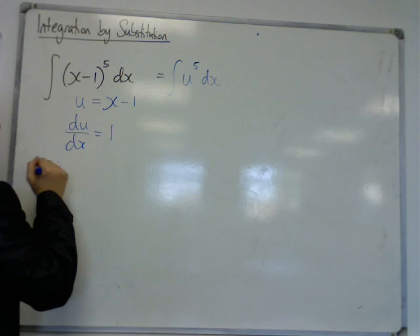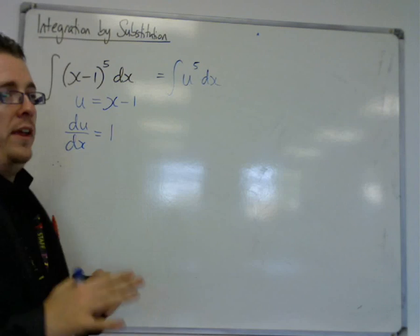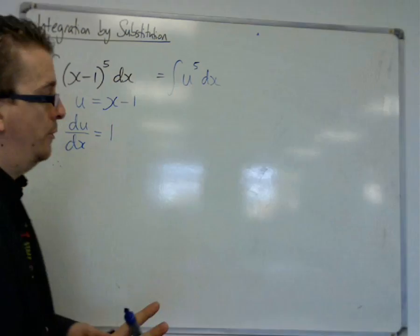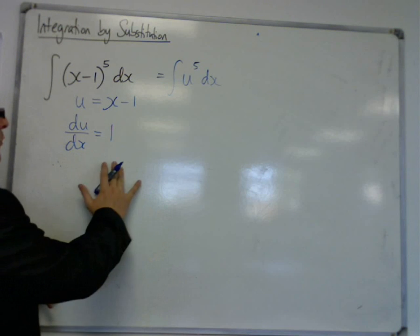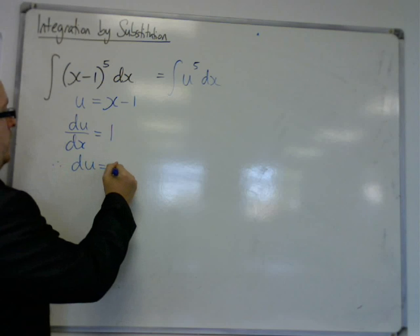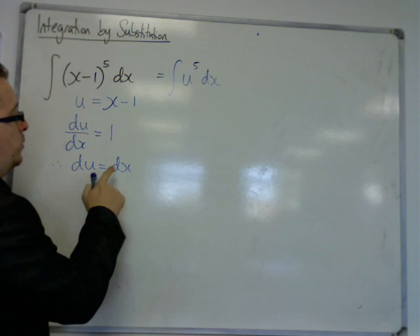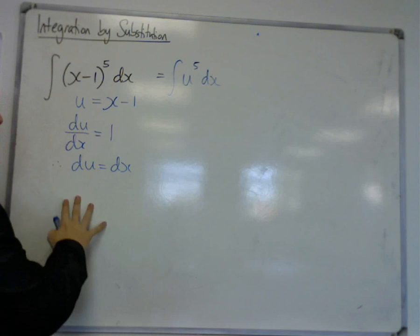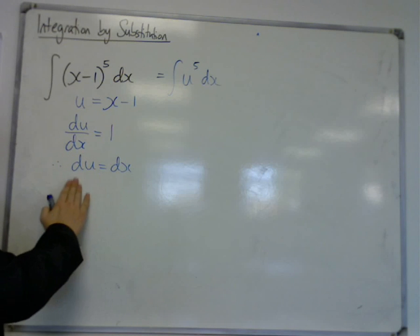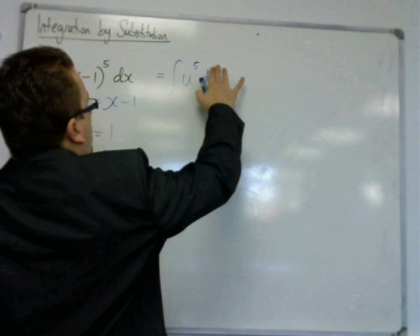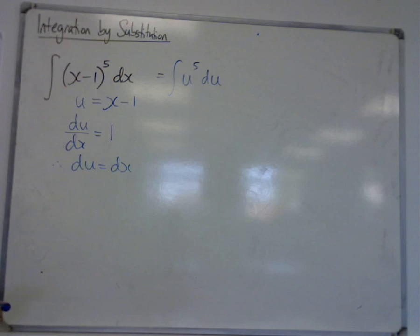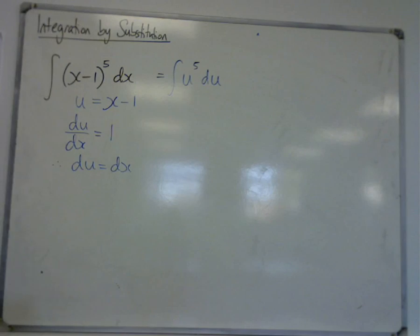Now, by rearranging this and treating the derivative as if it's a fraction, which usually is a big no-no, multiply both sides by dx and you get du equals dx. So in this case, you can make a straightforward swap of du to dx, or rather, dx to du.